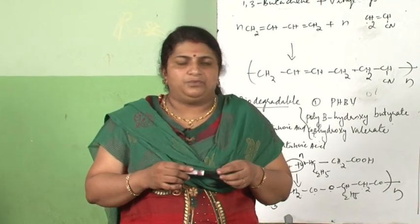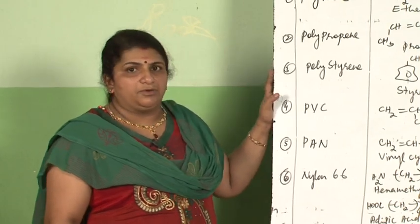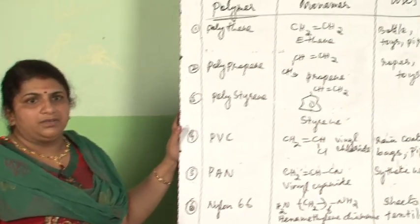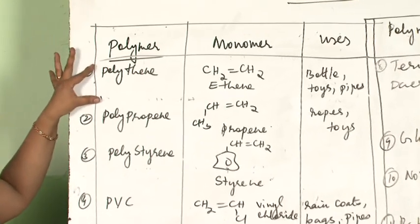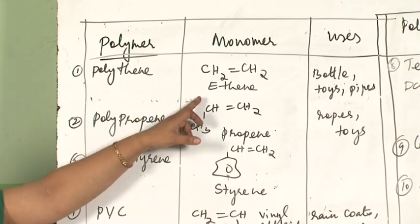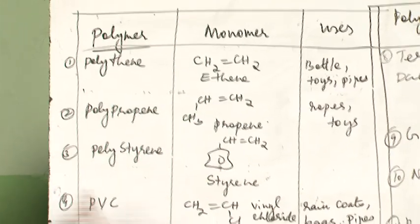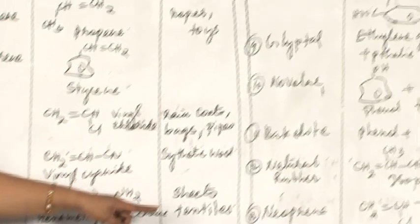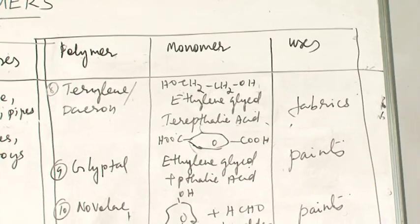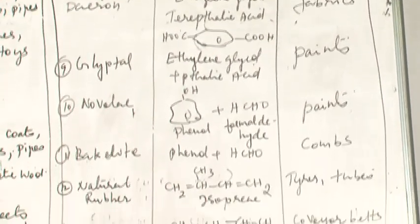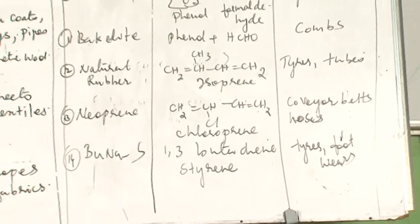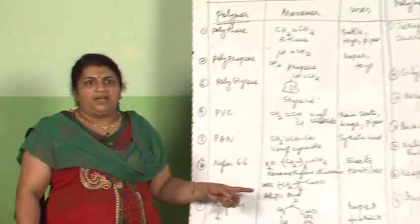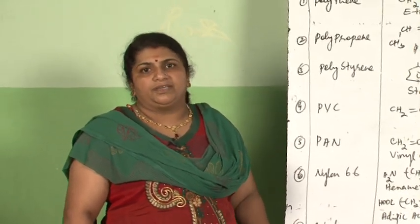Now, one small point about board exam questions: various addition and condensation polymers we have studied are summarized in a table — this is a very important board question, likely worth three marks. The table lists monomer names and structures. Biodegradable polymers and Buna N need to be added from the textbook. Go through the textbook back-exercise as well.